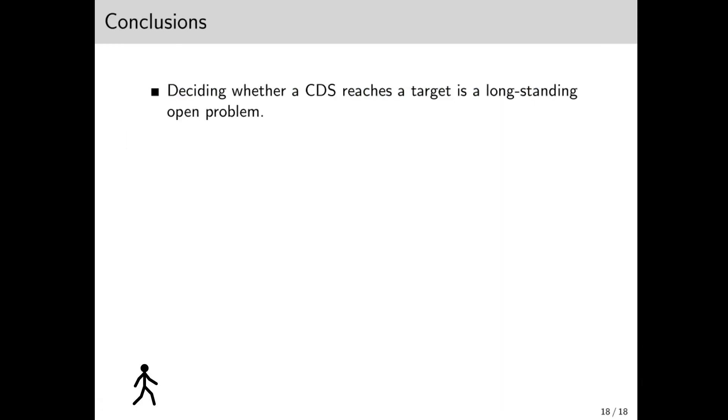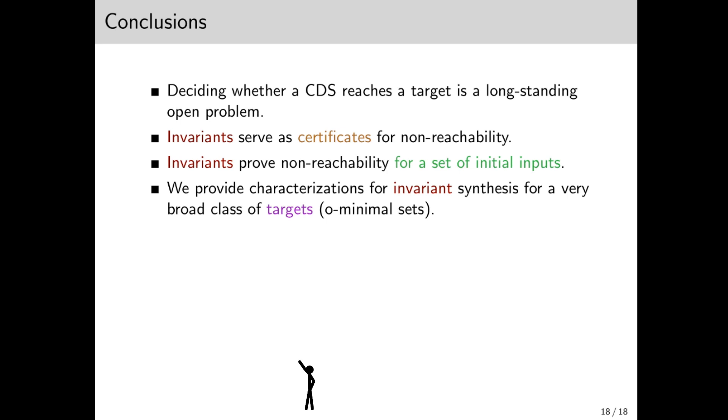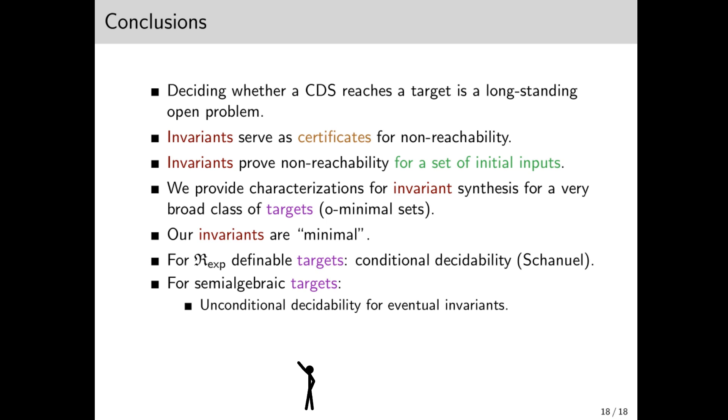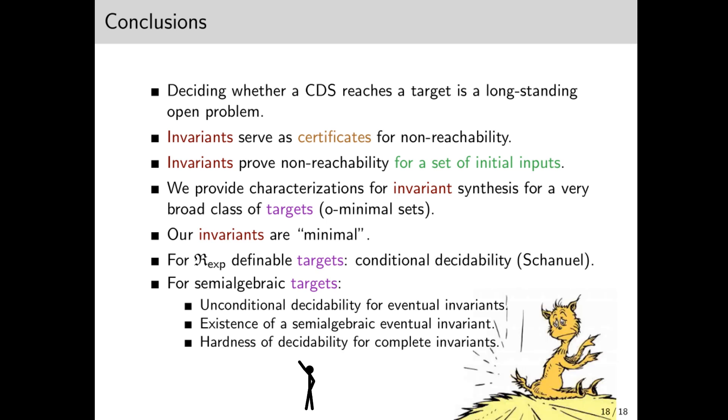Okay, wow, we've been through a lot. Just some concluding remarks. Deciding whether a CDS reaches a target is a long-standing open problem. We can use invariants as certificates of non-reachability. In fact, invariants show non-reachability for a set of initial points, namely anything in the invariant. We provide characterizations for invariant synthesis for O-minimal sets. Our invariants are minimal in that every invariant contains one of them. As for algorithms, for R_exp-definable targets, we have Schanuel-conditional decidability. And for semi-algebraic targets, we have unconditional decidability for eventual invariants. We show that we can find semi-algebraic eventual invariants, the fat cones, but finding an invariant for the entire orbit is hard. Thanks for listening.